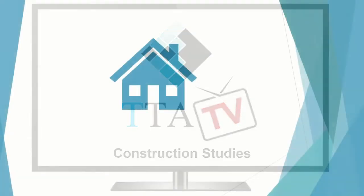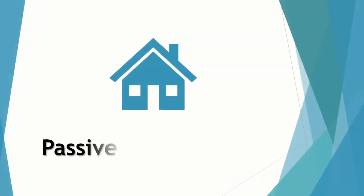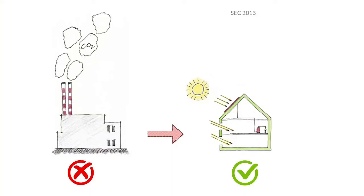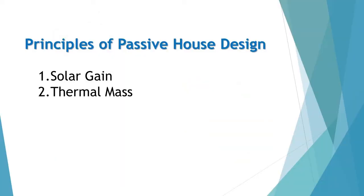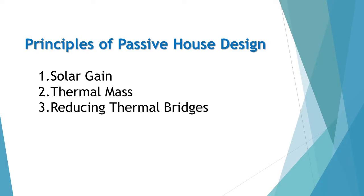Passive design is a method of construction where a comfortable interior environment can be created using very little energy, simply by eliminating the reliance on active heating or cooling systems. Passive design works on a specific set of five main principles: solar gain, thermal mass, reducing thermal bridges, air tightness, and the MHRV system.